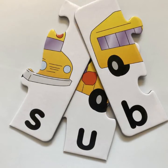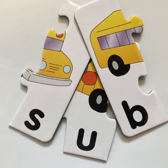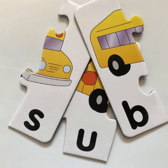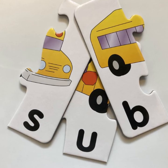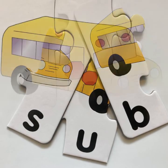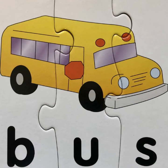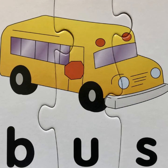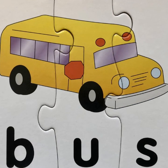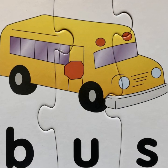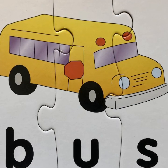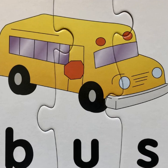Let's unscramble the letters to see what this word is. I see an S, a U, and a B. The word is bus. B, U, S. Bus.